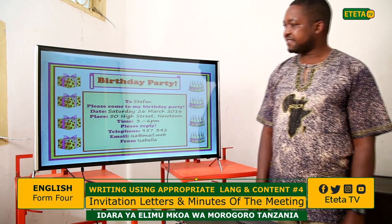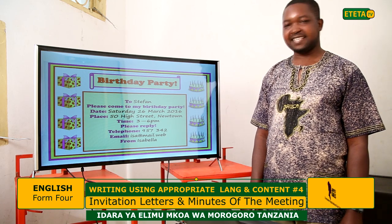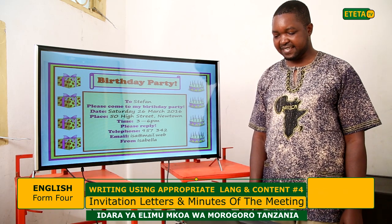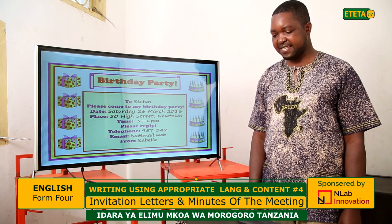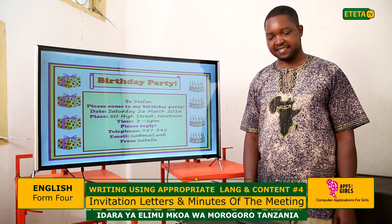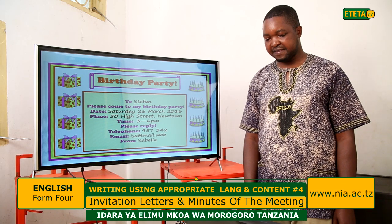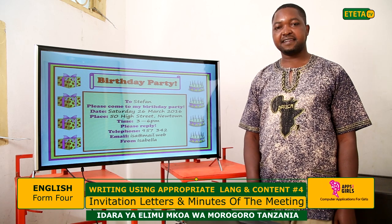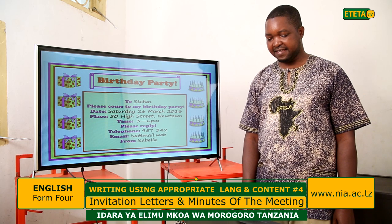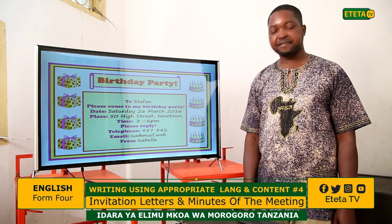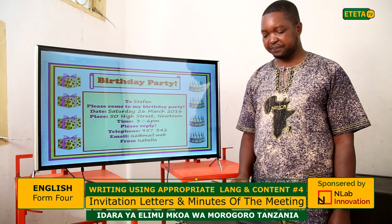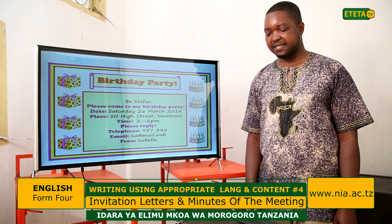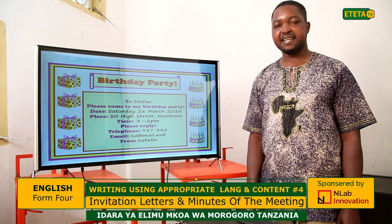Here is another example — a birthday party invitation card. To Stefan, please come to my birthday party. Date: Saturday, 26th March. Place: 50 High Street, New Town. Time: from 3 to 6 PM. Down there you have the statement: please reply. If you attend, a telephone number is provided, or you can inform them through email — the email address indicated is isa.mail.web. This invitation card is from Isabelra.